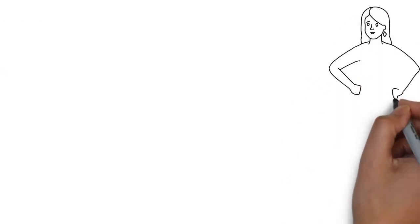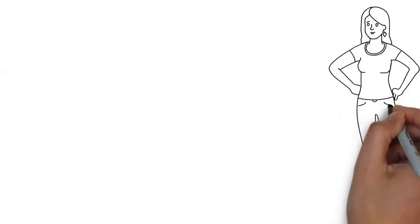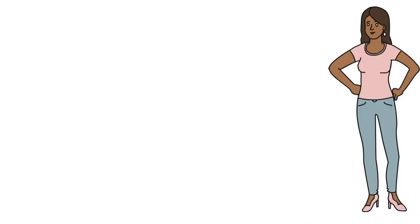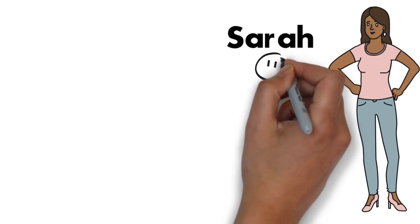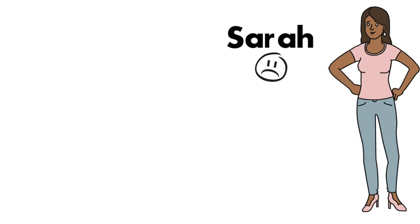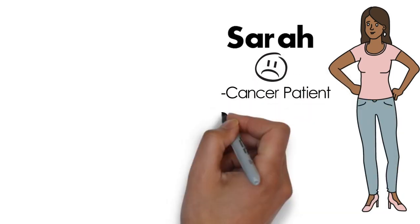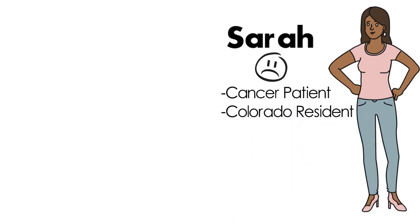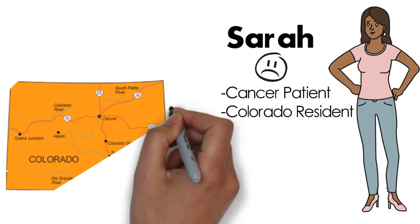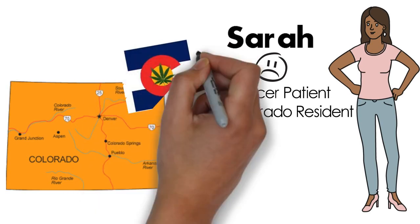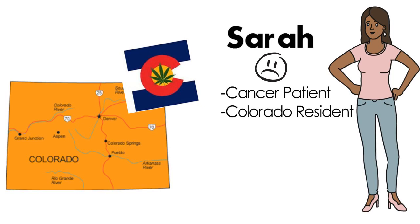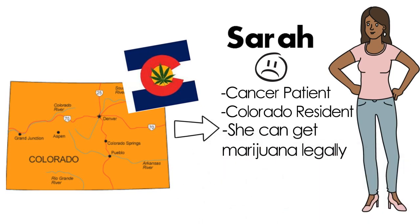So how can we relate this to deviance? Let's say there's a woman, we'll call her Sarah, and she has found out she has cancer. She knows that using medical marijuana will help relieve the nausea and pain induced by cancer treatments. Simply by being in a state where medical marijuana is legal can determine whether Sarah receives a deviant label. If Sarah is living in Colorado, where it is legal, she can apply for a medical marijuana card and make an appropriate doctor-approved transaction.